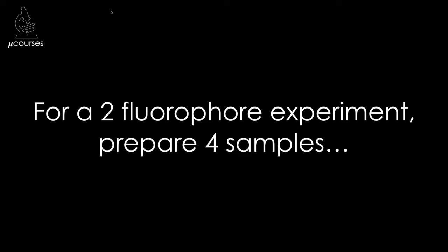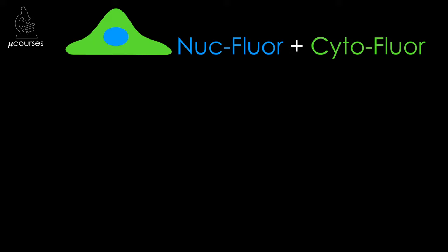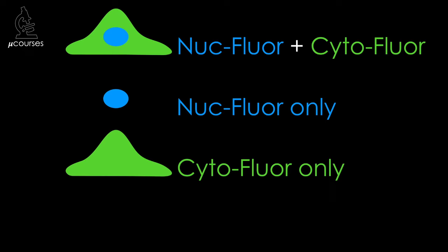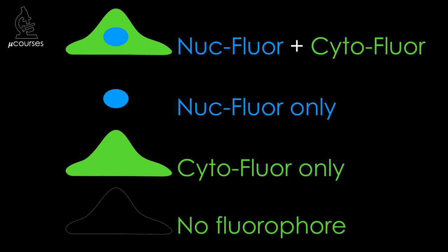To perform the necessary controls for a specimen labeled with two fluorophores, you should prepare four different types of samples. First, the experimental sample labeled with both fluorophores — in our example, nukeflor and cytoflor. You also need a single-labeled control with only nukeflor, and a single-labeled control with only cytoflor. Both controls should be prepared using the exact labeling protocol used for the experimental sample — just leave the fluorophore out. Biological samples can also contain autofluorescence, so include an unlabeled control to check for any detectable autofluorescence.